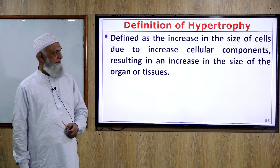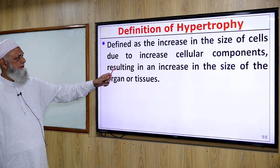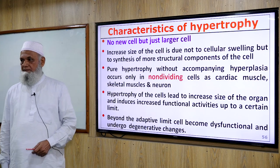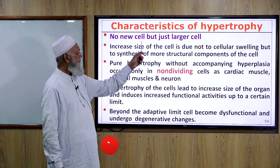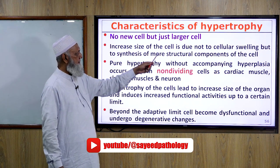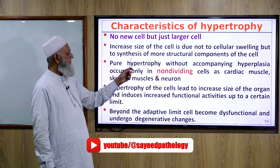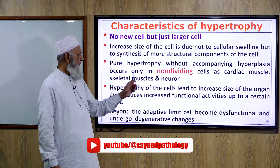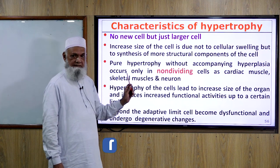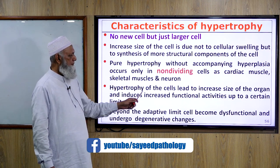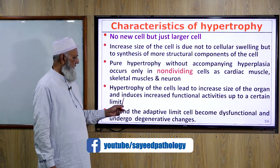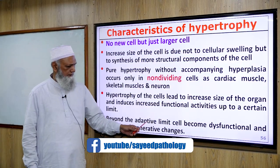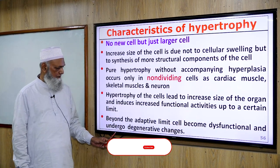Definition of hypertrophy: it is defined as the increase in size of cells due to increased cellular components, resulting in an increase in size of the organ or tissues. Key characteristics: number one, no new cell but just a larger cell. Number two, the increased size of the cell is due not to cellular swelling but to synthesis of more structural components. Pure hypertrophy without accompanying hyperplasia occurs only in non-dividing cells such as cardiac muscle cells, skeletal muscle cells, and neurons. Hypertrophy induces increased functional activity up to a certain limit. Beyond the adaptive limit, cells become dysfunctional and undergo degenerative changes.